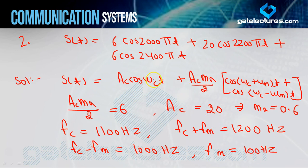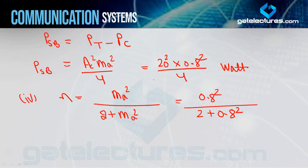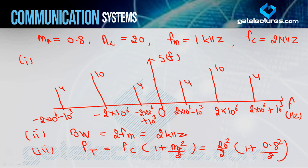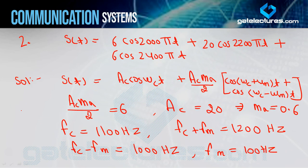Comparing this question with the last one, you now have the same known values: ma, AC, fm, fc. So you can solve all the same sub-questions — spectrum, bandwidth, power, efficiency. This full solution is left as homework. Post your answers in the comment section.